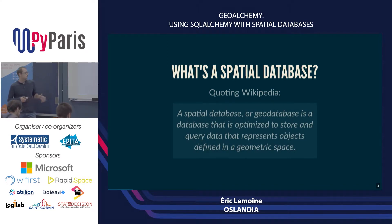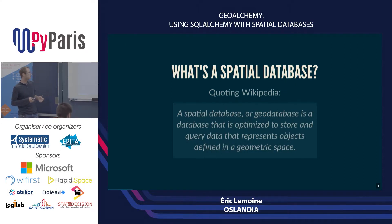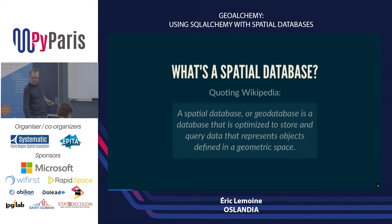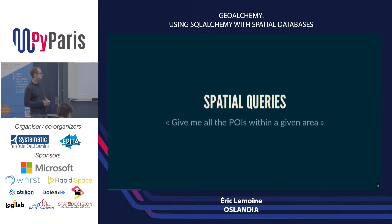So, spatial database — what is a spatial database? Quoting Wikipedia, a spatial database, or geodatabase, or geospatial database, is a database that is optimized to store and query data that represents objects defined in a geometric space. I think this is a good definition, maybe a bit complex, but to make it simple I'm going to give you a few examples of spatial queries.